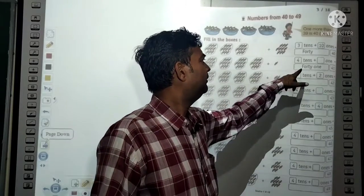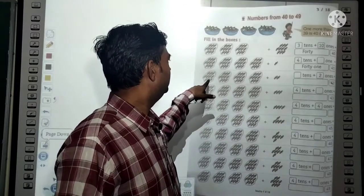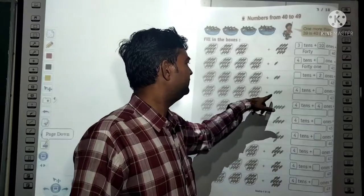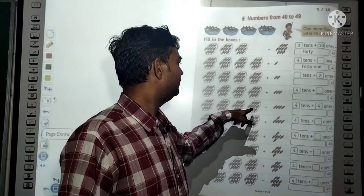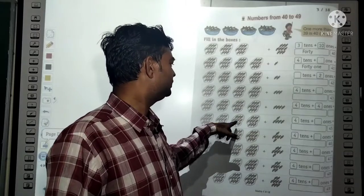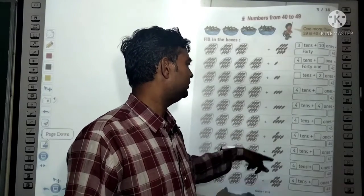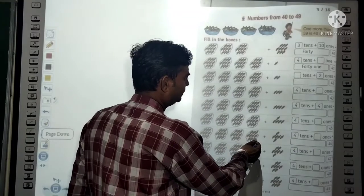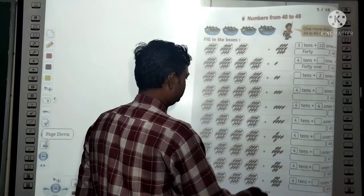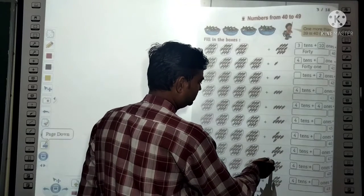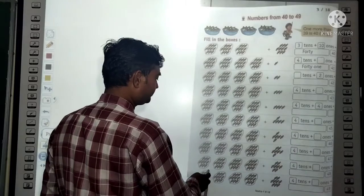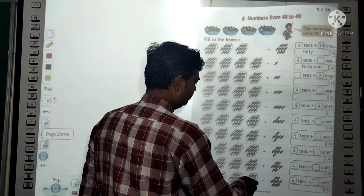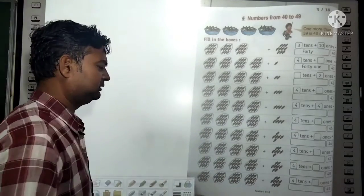4 tens + 1 one = 41; 4 tens + 2 ones = 42; 4 tens + 3 ones = 43; 4 tens + 4 ones = 44. Here is given: 4 tenths plus 6 ones; 4 tenths plus 7 ones; 4 tenths plus 8 ones; 4 tenths plus 9 ones = 49.